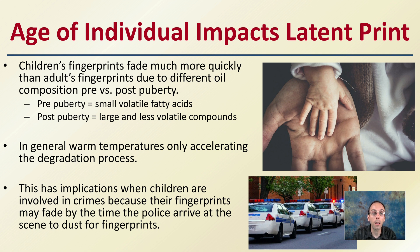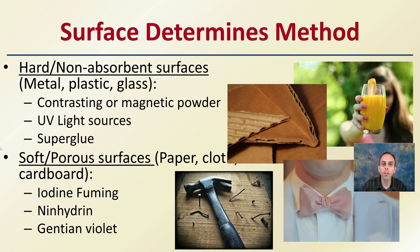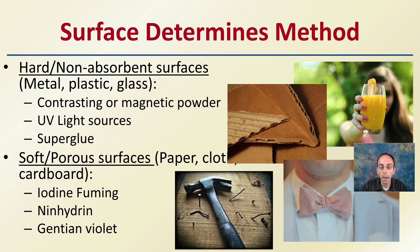The surface determines the method. Hard, non-absorbing surfaces such as metal, plastic, and glass can use contrasting or magnetic powder to identify prints pretty easily. You can also use UV light sources and superglue. Soft, porous surfaces such as paper, cloth, or cardboard — you can use iodine fuming, ninhydrin, or gentian violet/crystal violet. Knowing the surface determines the method you should be utilizing.